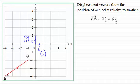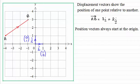Now I'll move vector AB out of the way. So what do we mean by a position vector? Well, position vectors always start at the origin.